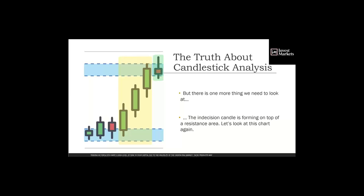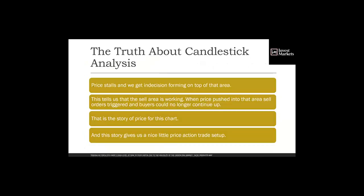Altogether, this indecision candle forming right after a strong bullish trend suggests the power has shifted from a decidedly bullish market to an undecided one — not bearish, but undecided. Sellers are not in control, neither are the buyers. And there's one more thing: the indecision candle is forming on top of a resistance area. Price stalls and we get indecision right on that area, telling us the selling area is working — orders triggered and buyers could no longer continue up.